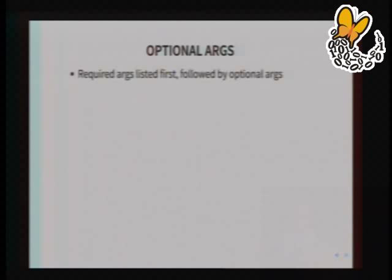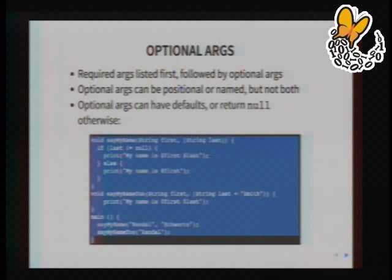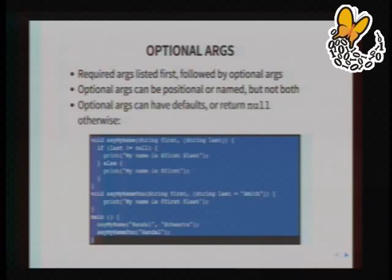Args can also be optional. Parameters not inside curly braces or square brackets are required. Parameters inside square brackets are optional — if you pass one parameter it goes into 'first'; if you pass two, the second goes into 'last'. If not passed, the value is null. You can also provide a default value: 'String last = Smith' means if no second value is passed, it defaults to 'Smith'. So saying myName to Randall would print 'My name is Randall Smith'.